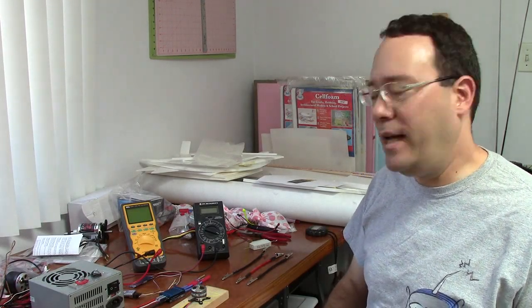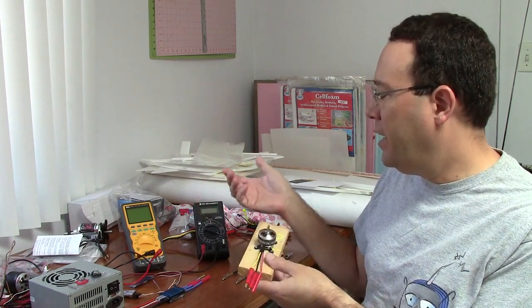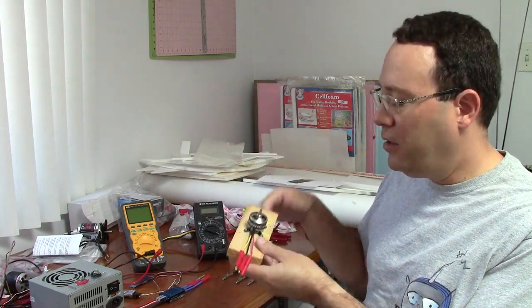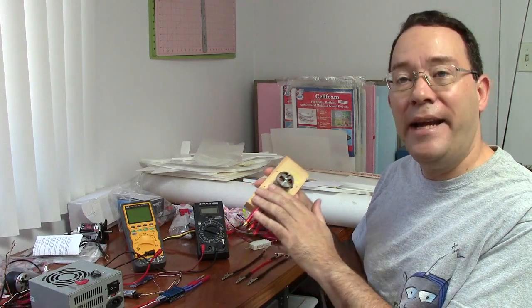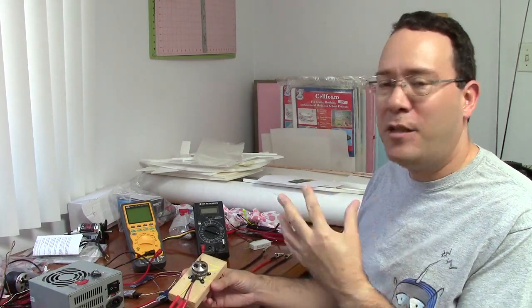When it comes to measuring the motor constants, you may think that you can just take a multimeter and an ammeter or another multimeter and just hook them up directly to the motor to measure the voltage and the current, but you can't and it's very frustrating for me. Let me explain why.